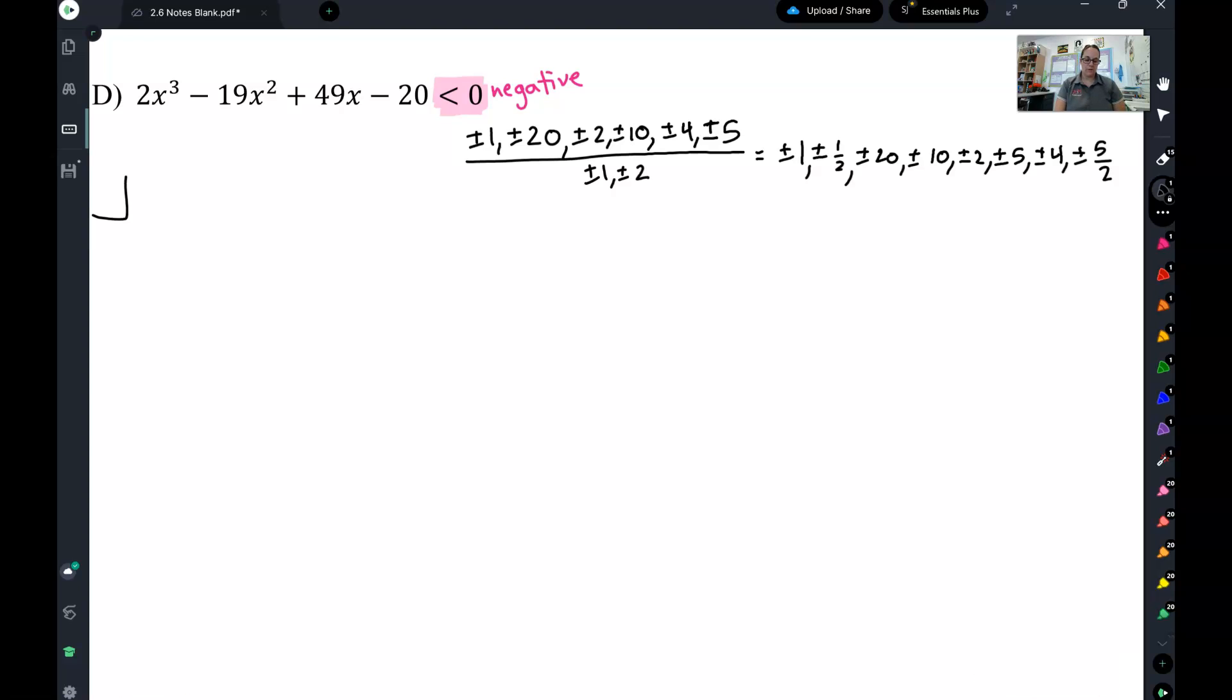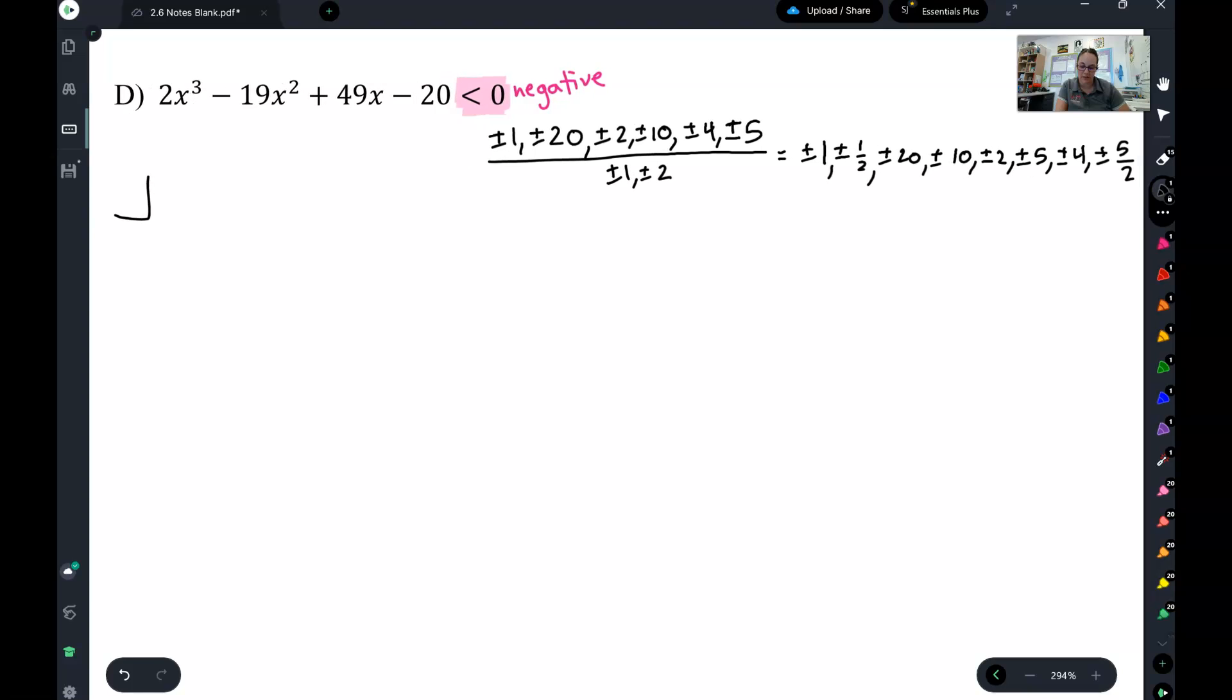So I've got 1, 2, 3, 4, 5, 6, 7, 16 different possibilities here.